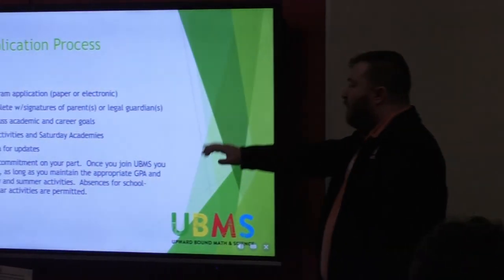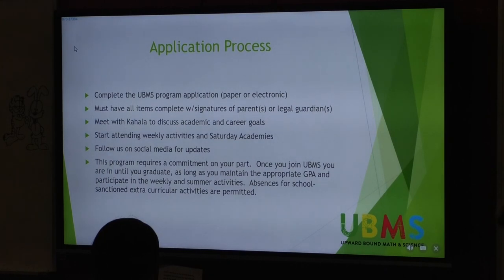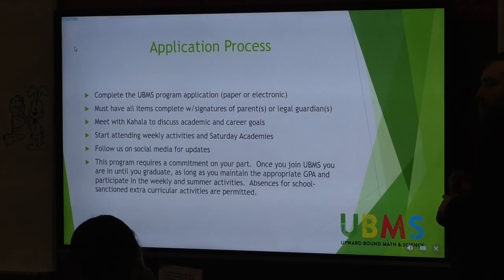The application process, pretty simple, pretty standard. Complete our UBMS program application. I have a shortened version of our program application up here in the front that you all can take with you. You can be paper, it can be electronic, there's a QR code on the front of it. If you want to scan it with your phone and fill it out over the phone, then you can do that. But this has to have all items complete with signatures of parents or legal guardians. Once you fill out this shortened application and if you qualify to be part of our program, then I'll give you some more information, some more forms that you'll have to have your parents fill out.